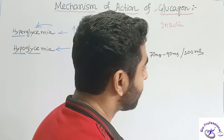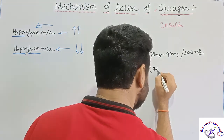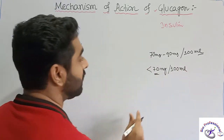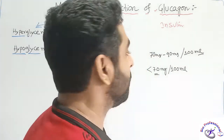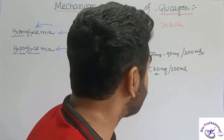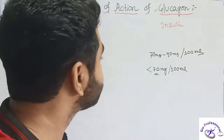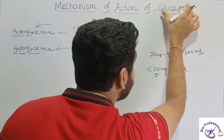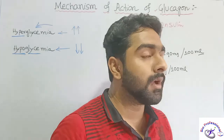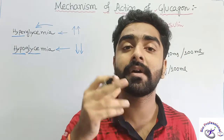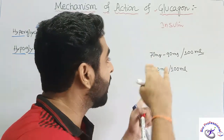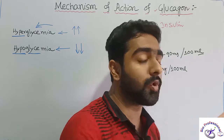If the blood glucose level is less than 70 mg per 100 ml, then glucagon will come into play. It will receive information and ultimately the blood glucose level will be maintained. So when the blood sugar level is low, glucagon comes into play. We say that glucagon is a hyperglycemic hormone — it helps to increase the blood glucose level.